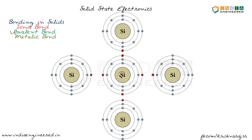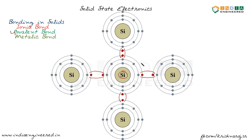Consider the silicon atom at the center — it has four electrons in the valence shell. It shares an electron with one neighboring silicon atom, then another, and so on. Counting up: five, six, seven — and when it completes this sharing with all four neighbors, the silicon atom at the center now has eight valence electrons.